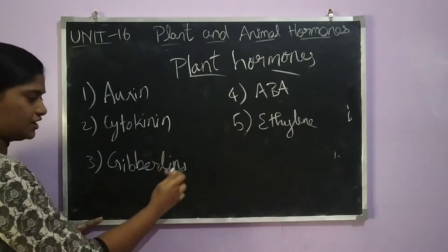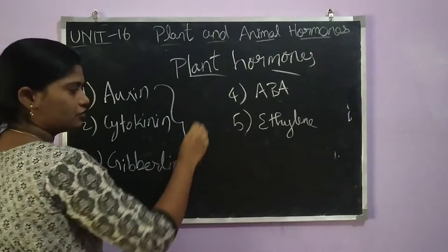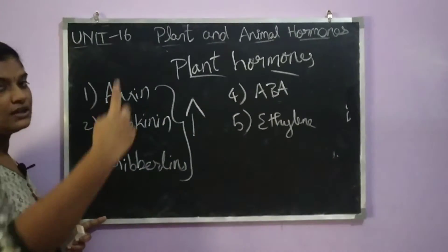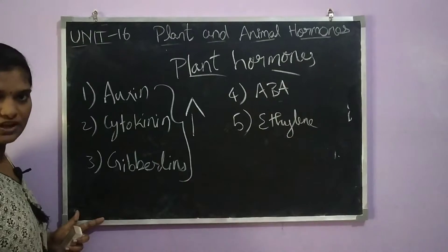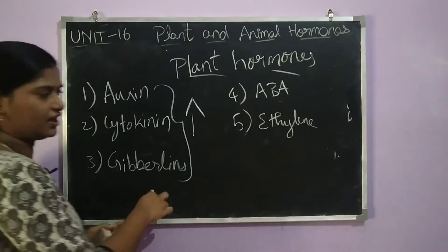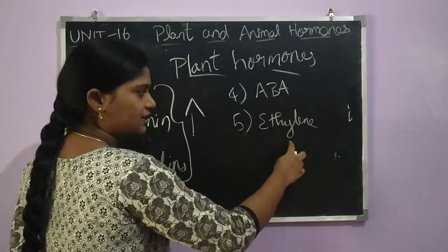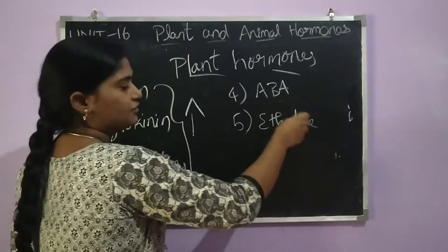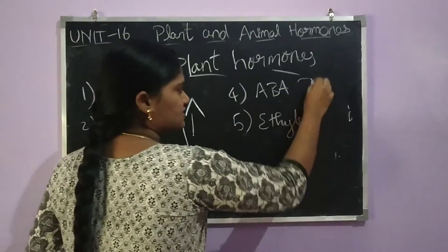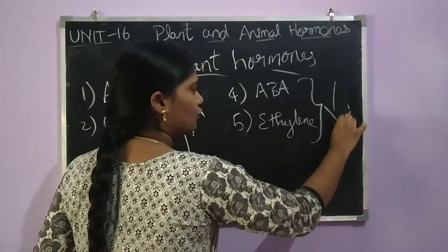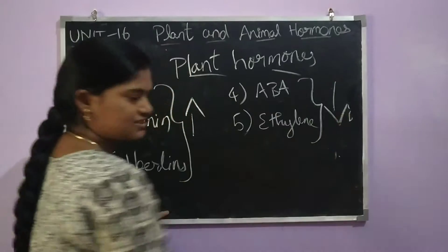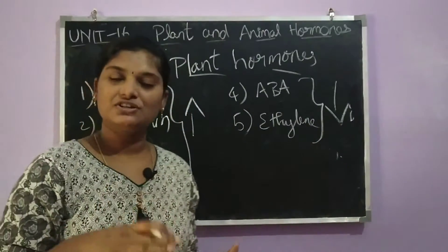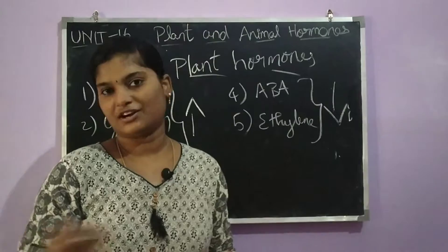In these 3 hormones — auxin, cytokinin, and gibberellins — we are going to see plant growth, as they support plant growth. Whereas abscisic acid and ethylene cause plant growth to decrease. Abscisic acid inhibits growth.